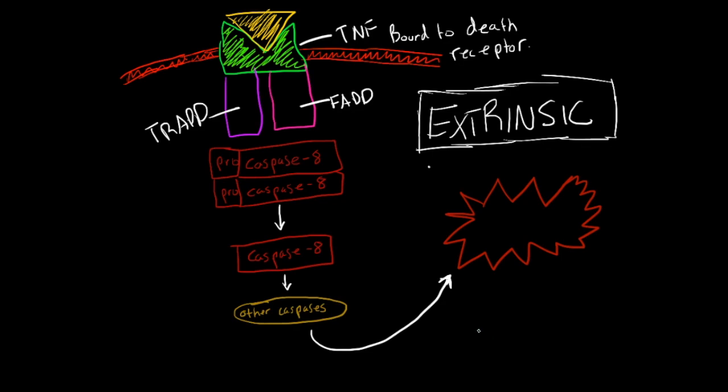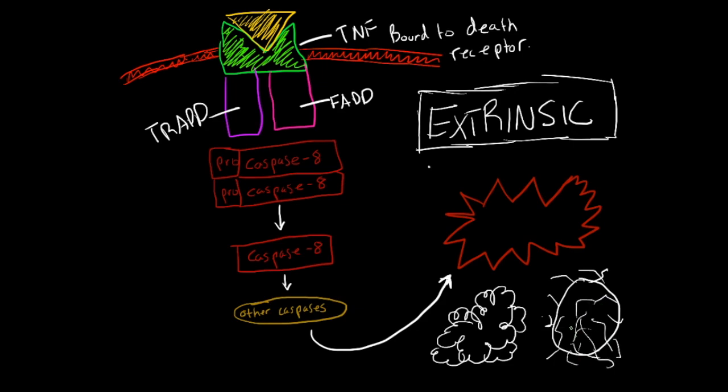An apoptotic cell looks like this. It's all blebby, and it's all programmed and very controlled. Everything is controlled, whereas a necrotic cell just kind of looks like this. And it has like leaky membrane stuff coming out everywhere. It's more of a sick-looking type of cell, and it's just all swollen and gross.